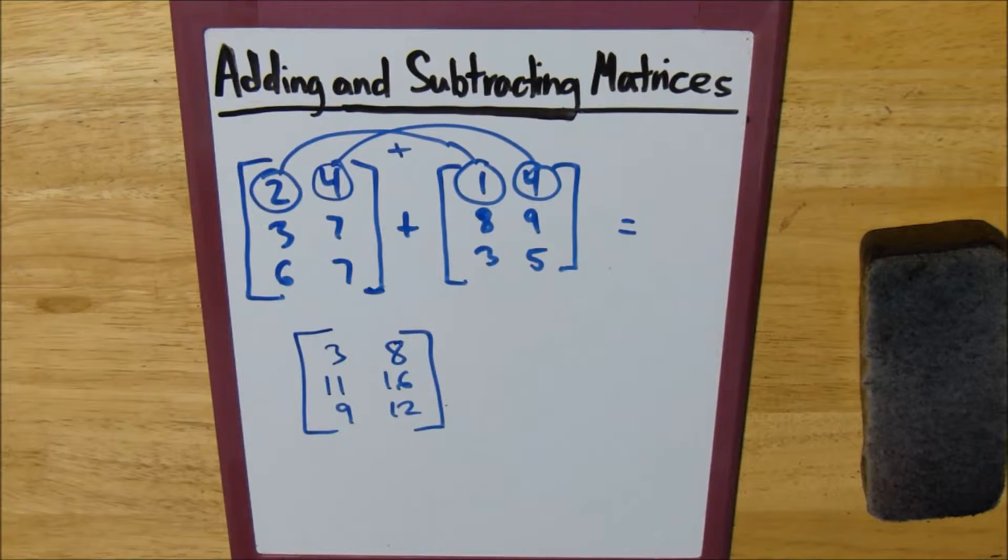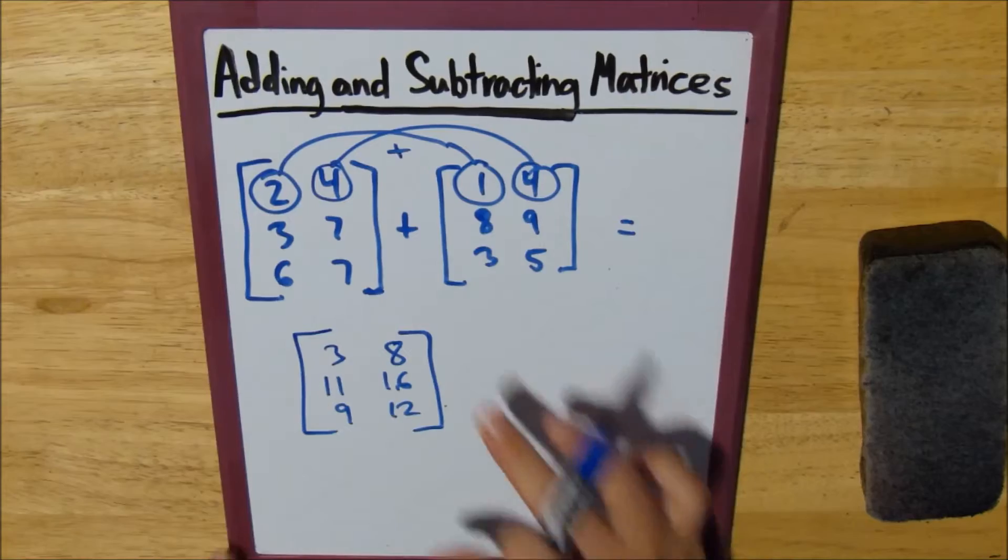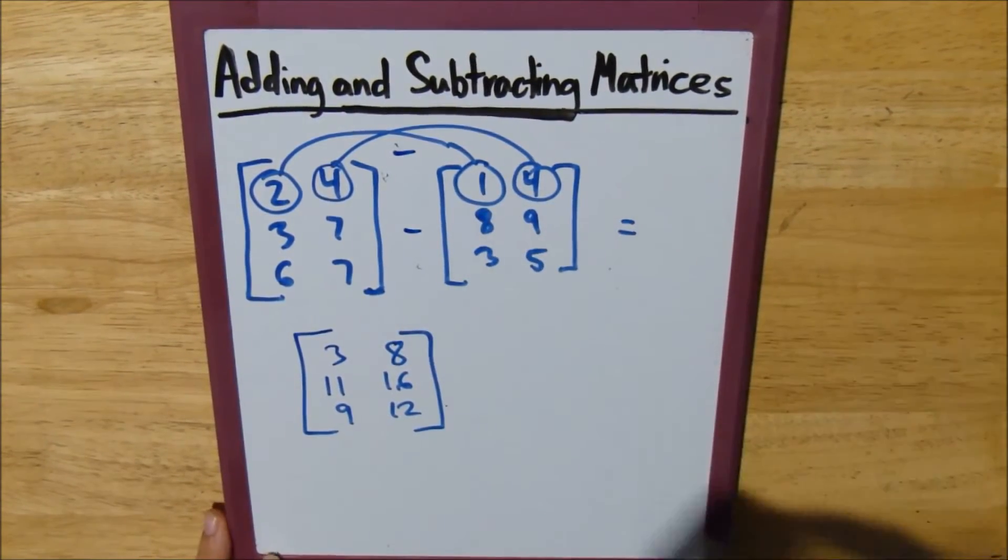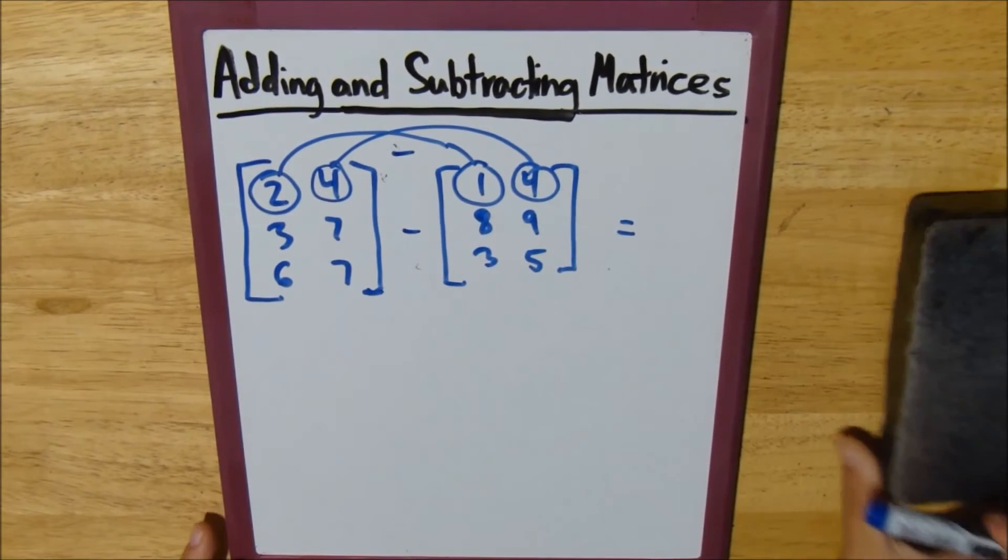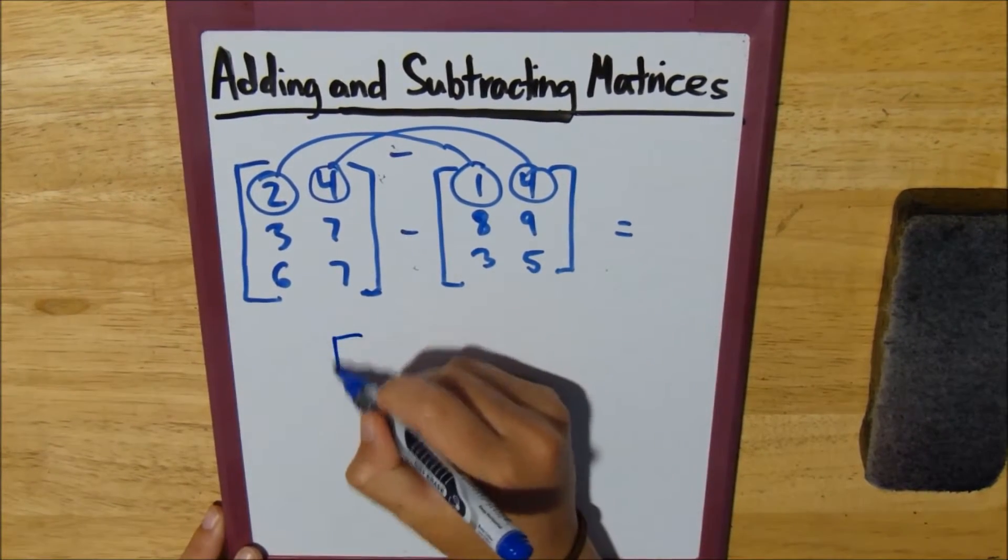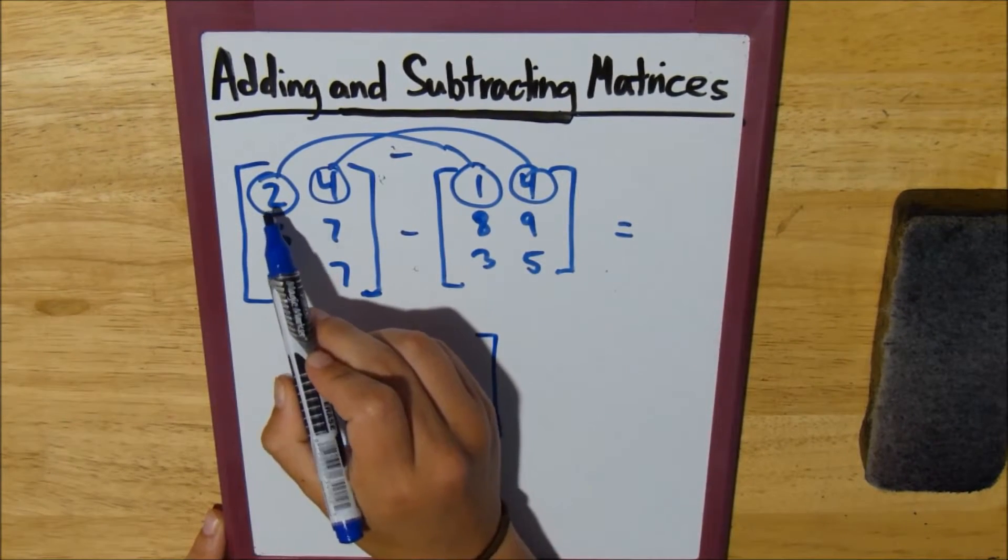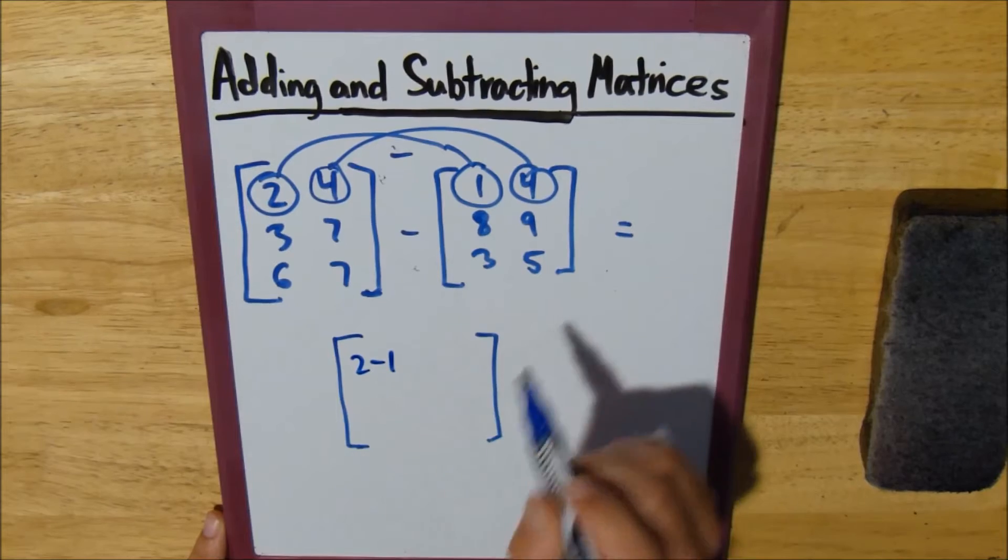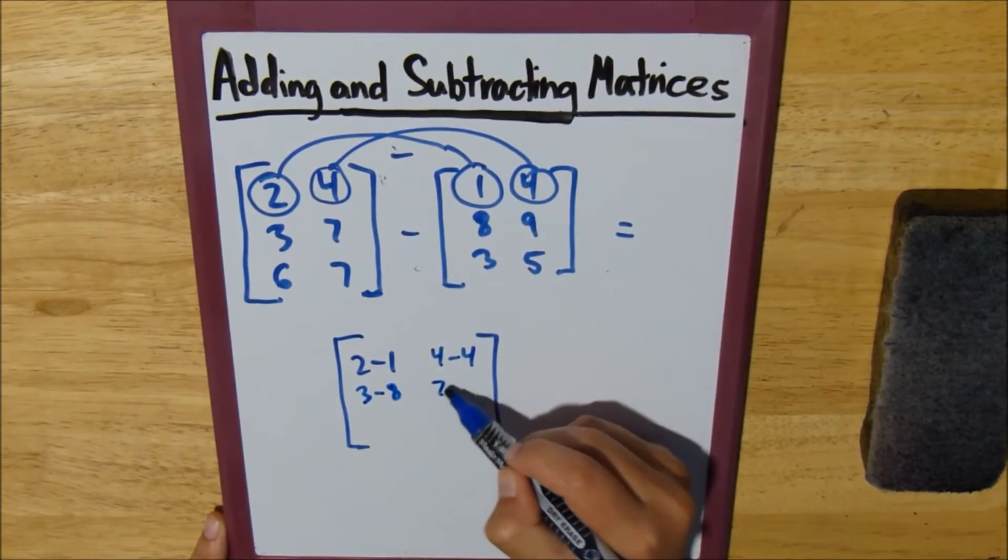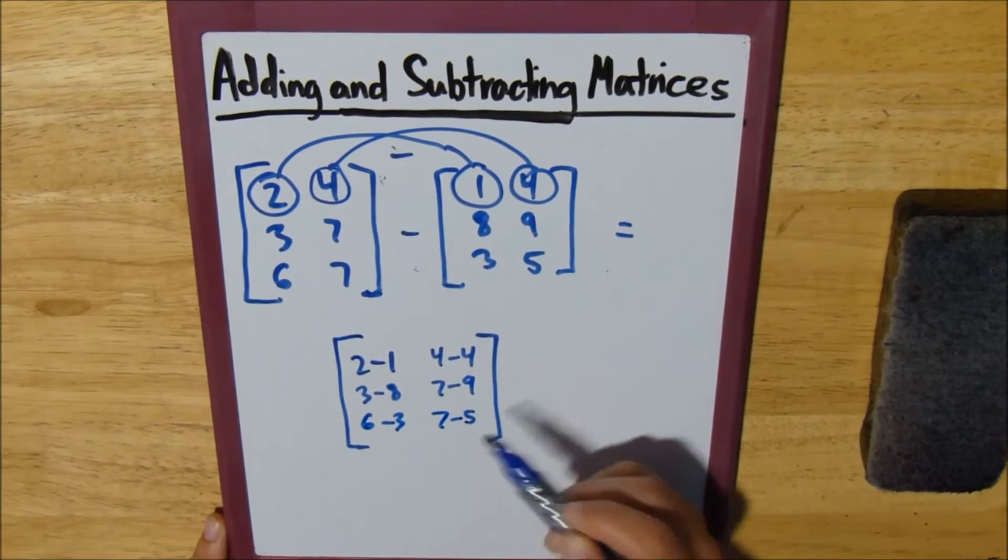So now let's suppose that instead of adding these two matrices, we were asked to subtract them. Now, it's basically the same thing except you're subtracting the numbers. So, first number of the first row, first column: 2 minus 1, 4 minus 4, 3 minus 8, 7 minus 9, 6 minus 3, and 7 minus 5.